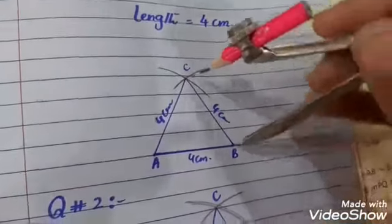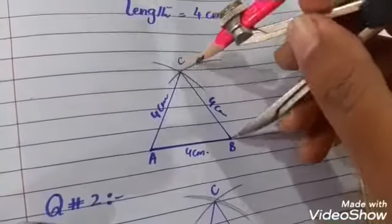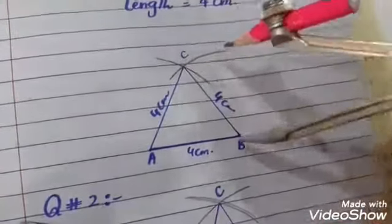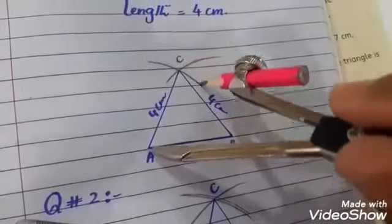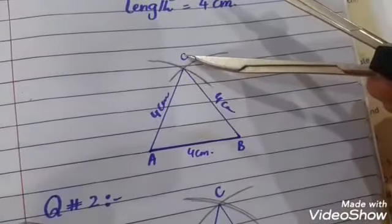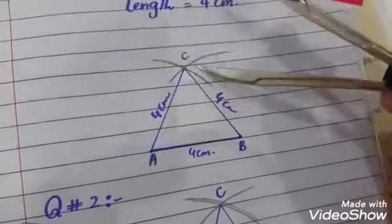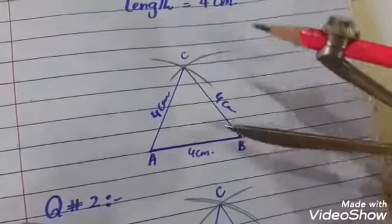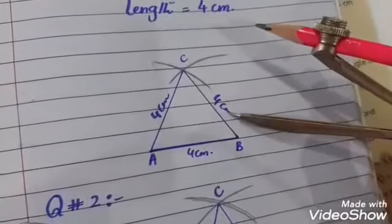The two arcs intersect at point C. Then, connect point C to both A and B. The measurements AC and BC are both 4 cm, completing the equilateral triangle.